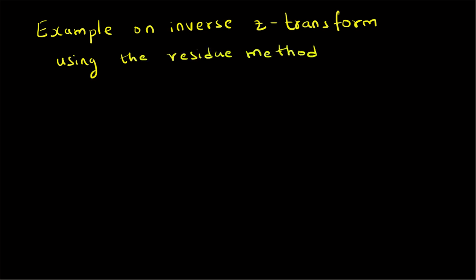In this video we are going to look at the following: X(z) is given as X(z) = 1/(1 - az⁻¹), which has an ROC of |z| > |a|, that is, a region outside the circle of radius a. For this z-transform, we have to find the corresponding signal x(n) using the residue method.